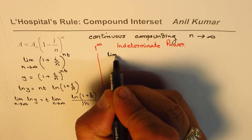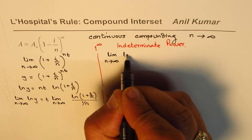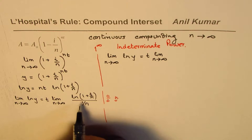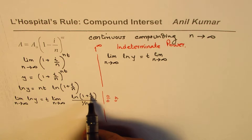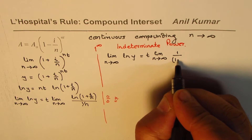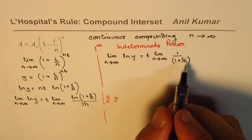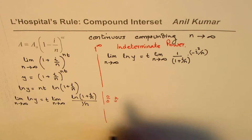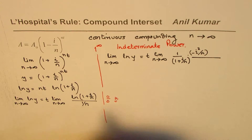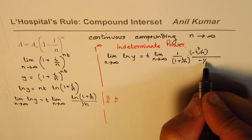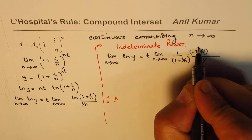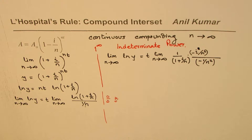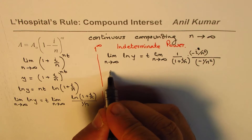We rewrite: limit as N→∞ of ln Y = T times limit as N→∞ of [derivative of numerator / derivative of denominator]. The derivative of ln(1 + i/n) is 1/(1 + i/n) times the derivative of (i/n), which is −i/n². The derivative of (1/n) in the denominator is −1/n². So we get N² and N² canceling out.